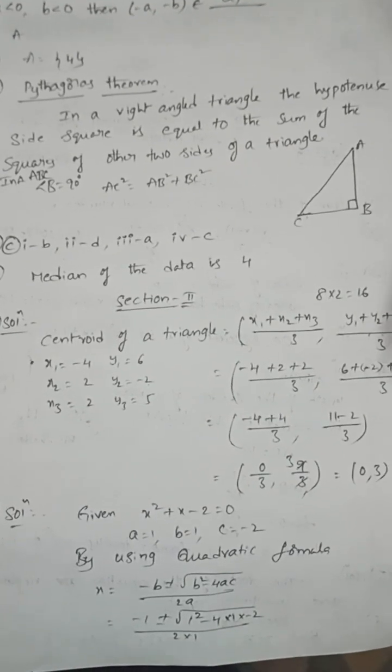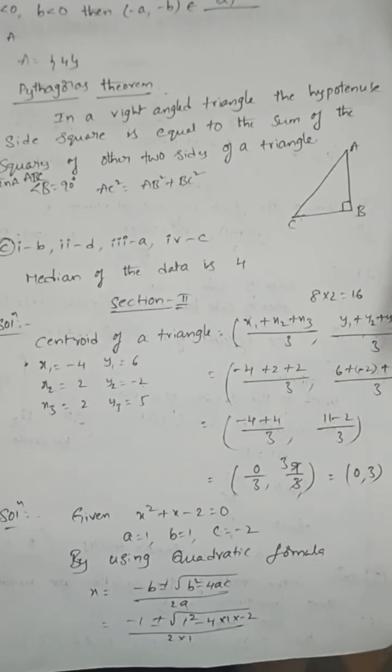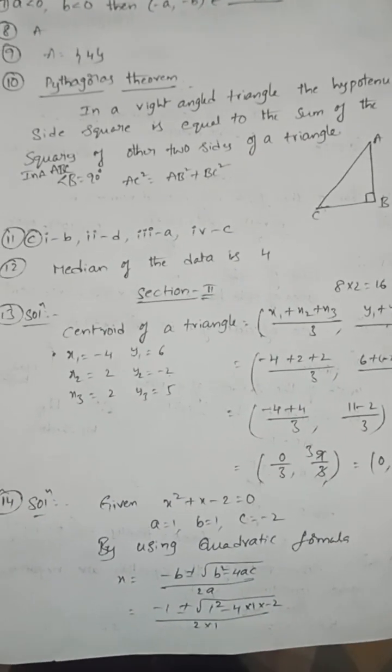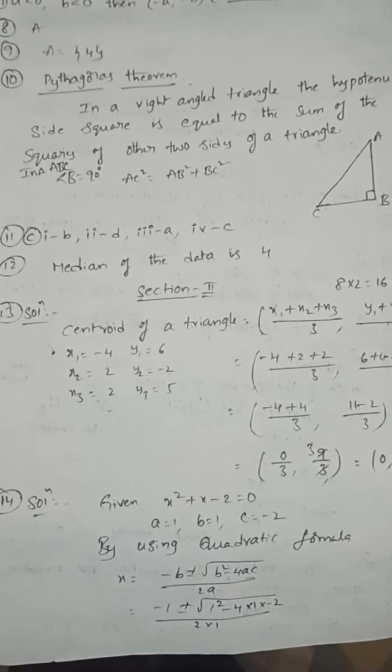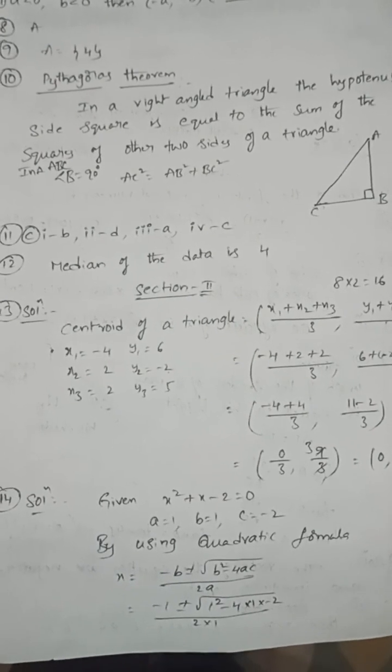Centroid of a triangle is ((x₁+x₂+x₃)/3, (y₁+y₂+y₃)/3). Here x₁,y₁ is -4,6; x₂,y₂ is 2,-2; x₃,y₃ is 2,5. So the centroid is 0,3.